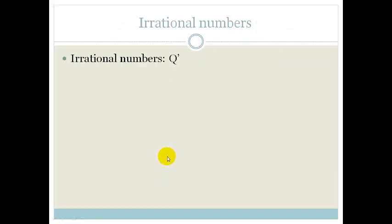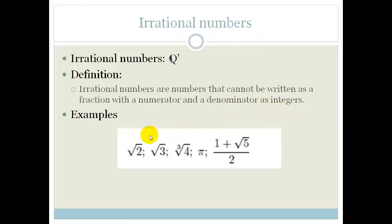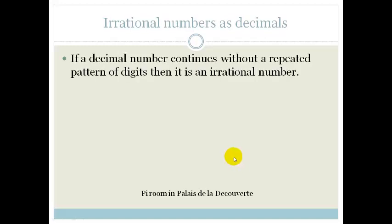Now, let's talk about irrational numbers. Irrational numbers are written as q prime. Definition: Irrational numbers are numbers that cannot be written as a fraction with a numerator and denominator's integers. Examples are root 2, root 3, cube root of 4, pi, and 1 plus root 5 over 2. If you put any of these in your calculator, you'll end up with very long numbers. In fact, the digits will just carry on forever and ever.